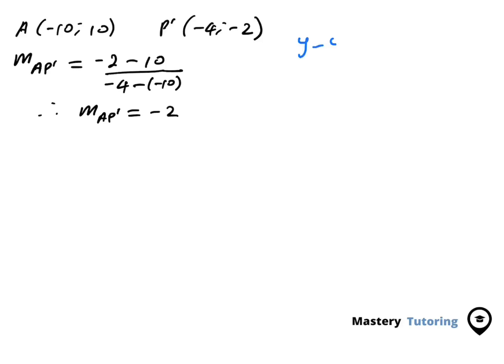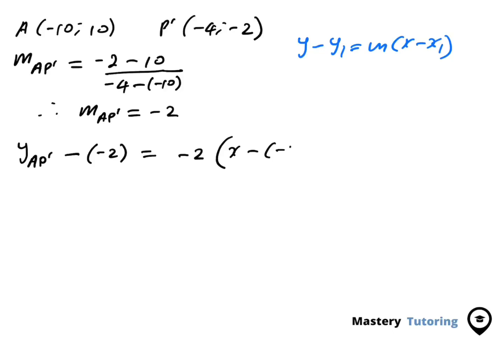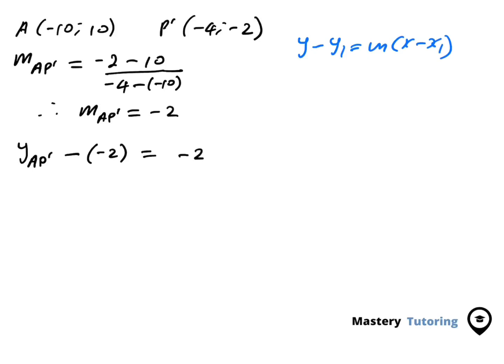Using the point-slope formula y minus y1 = m(x minus x1), and using the coordinates of P' = (-4, -2) with slope -2, we substitute: y - (-2) = -2 times (x - (-4)). This becomes y + 2 = -2(x + 4), so y + 2 = -2x - 8. Therefore, y of AP' equals -2x - 8 - 2.